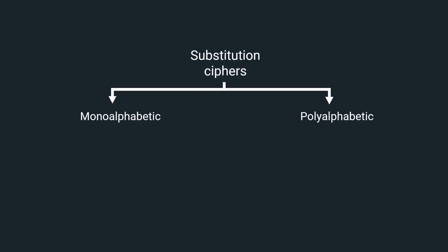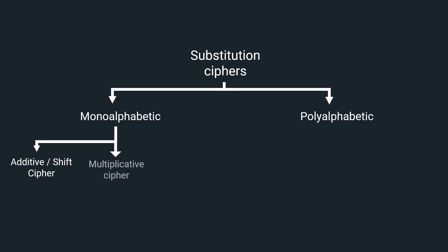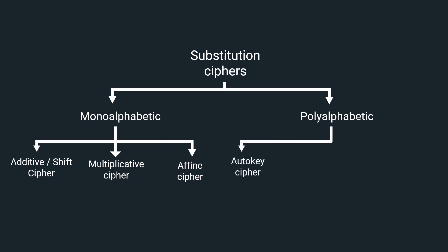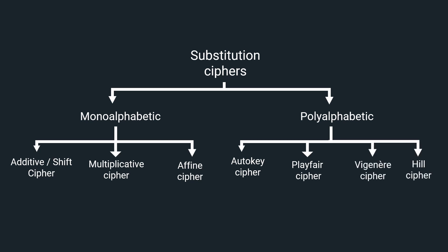In this video, we understood both categories of substitution ciphers: monoalphabetic ciphers and polyalphabetic ciphers. Monoalphabetic ciphers are further classified into three types: additive or shift cipher, multiplicative cipher, and affine cipher. Polyalphabetic ciphers are further classified into four types: auto key cipher, Playfair cipher, Vigenère cipher, and Hill cipher. We will cover each of these in great detail in the future videos.